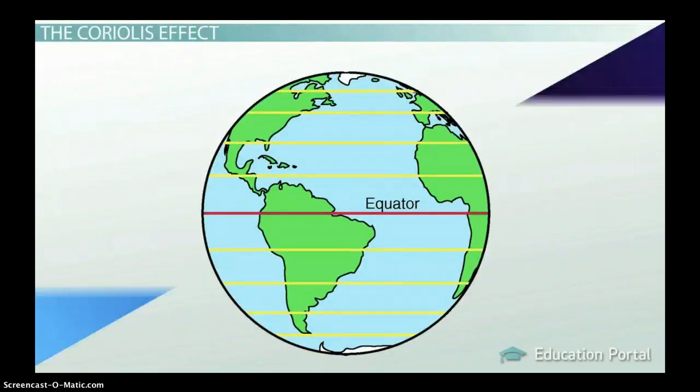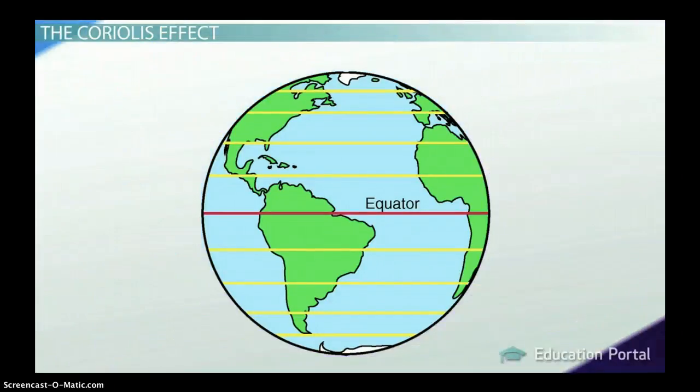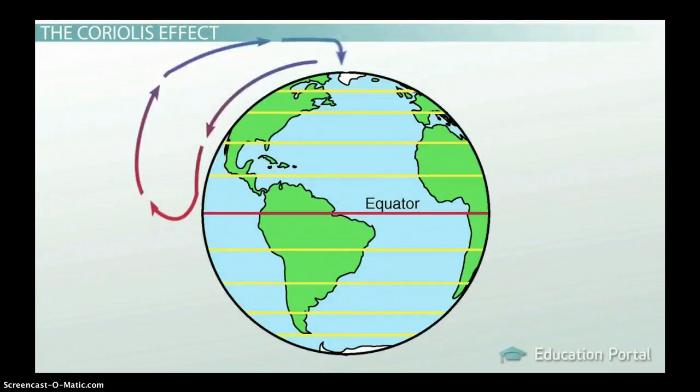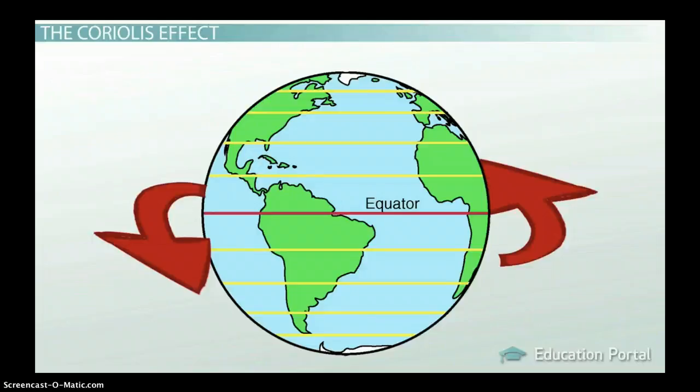If Earth didn't rotate, which we know it does because we have cycles of day and night, this pressure gradient force would create two single-cell circulations of wind, one for the Northern Hemisphere and one for the Southern Hemisphere. But since Earth does spin on its axis, we get multiple circulations of wind on Earth.